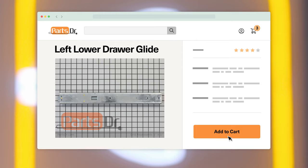If you need to purchase a new drawer glide for your refrigerator, check out our website PartsDoctor.com where we sell parts for all major appliance brands.